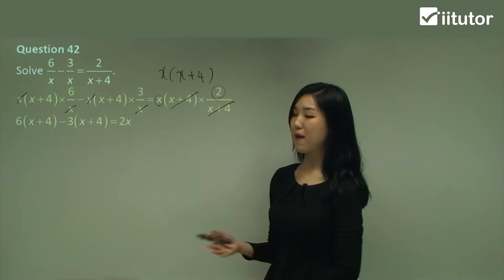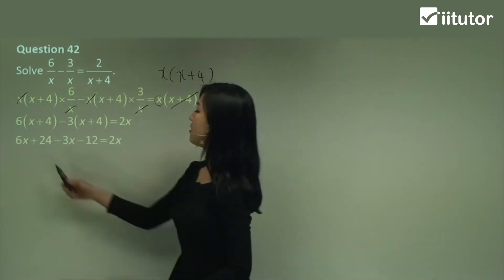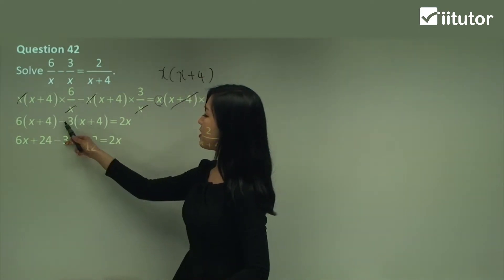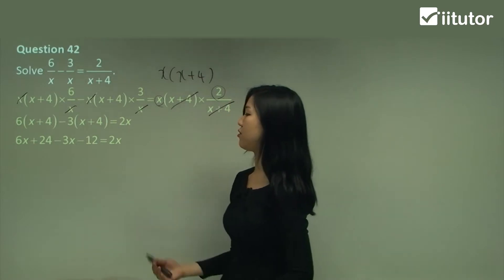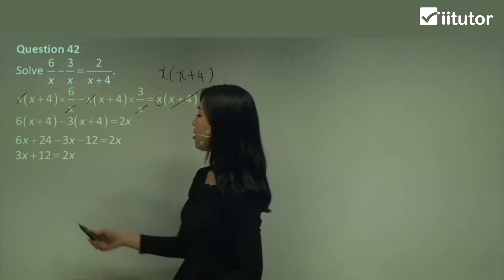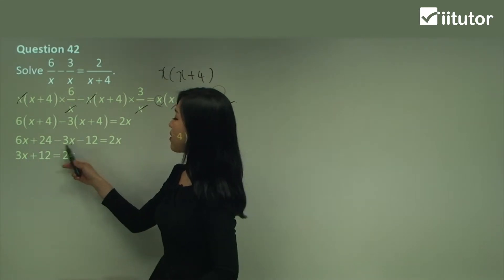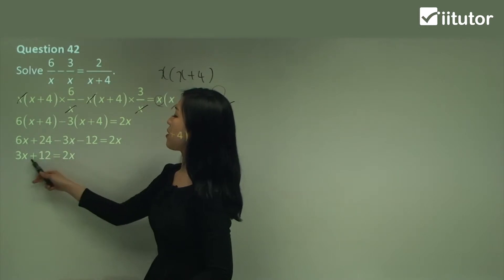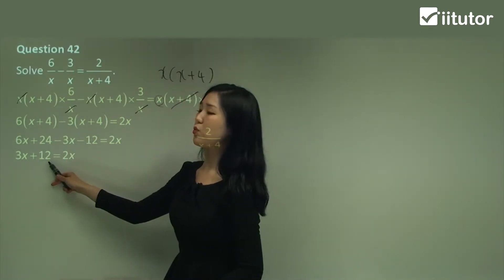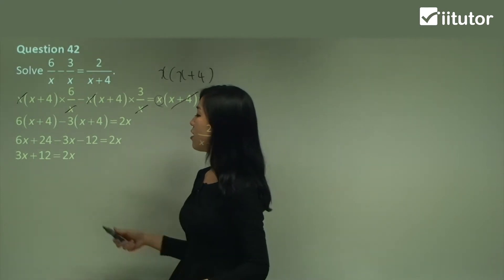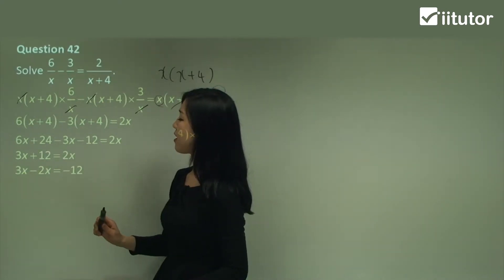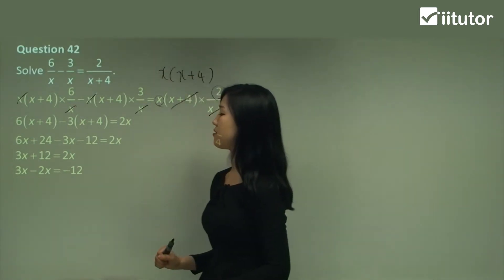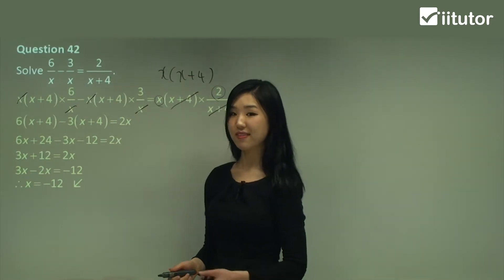Now it's a lot more simple — expand it out. That one is 6x plus 24. Negative 3x — negative plus makes negative — so negative 12 equals 2x. Gather your like terms: 6x minus 3x is 3x, and 24 minus 12 is 12. Now move your 2x over to this side and move the 12 over to the other side by switching the signs. So 3x minus 2x is x. x is negative 12 — that's the answer.